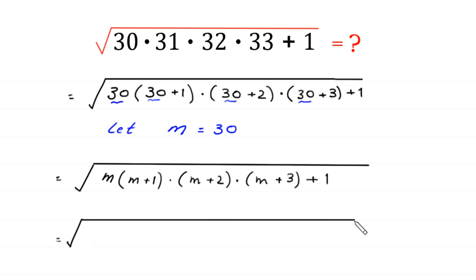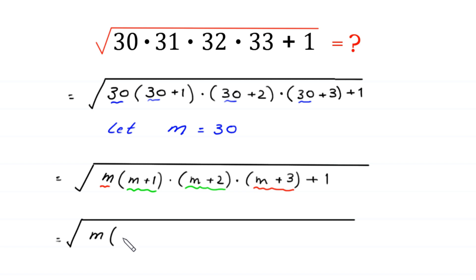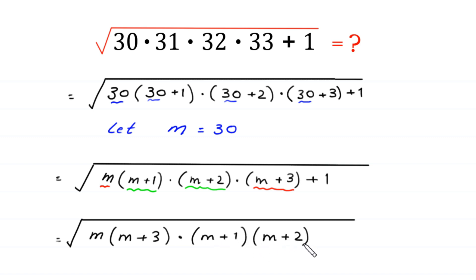Next, we rearrange by pairing m with (m+3) and (m+1) with (m+2), like this: square root of m times (m+3) times (m+1) times (m+2) plus 1.